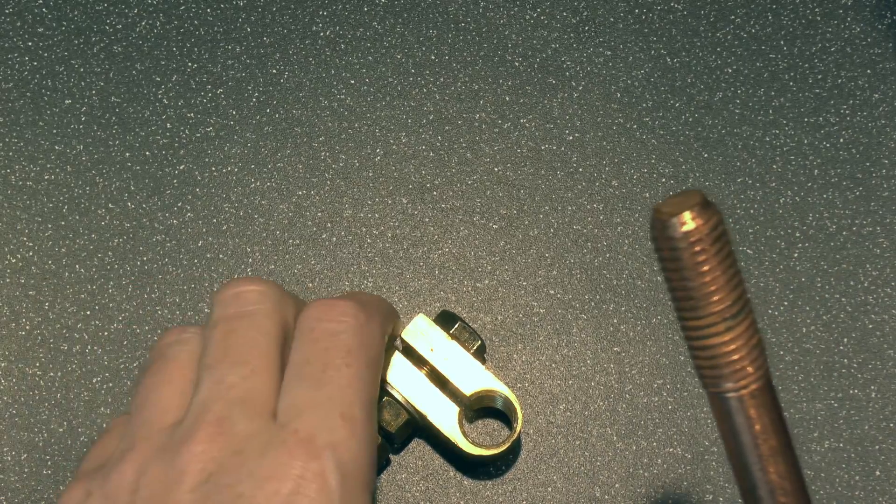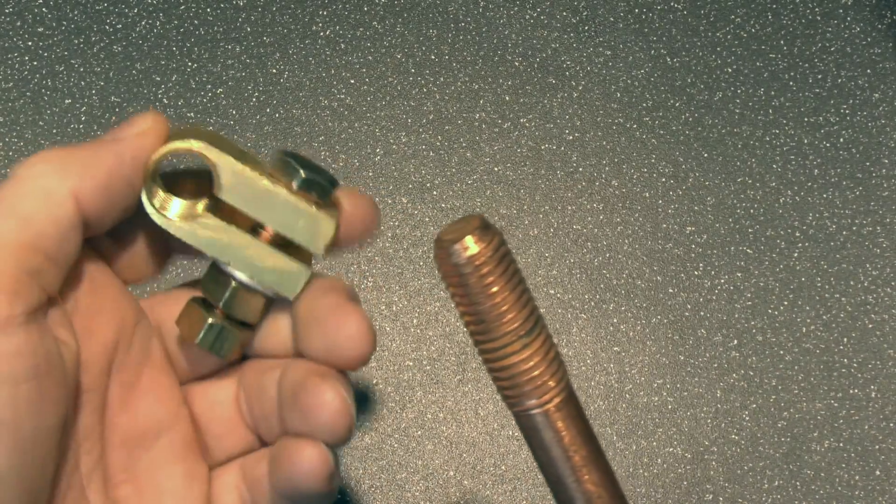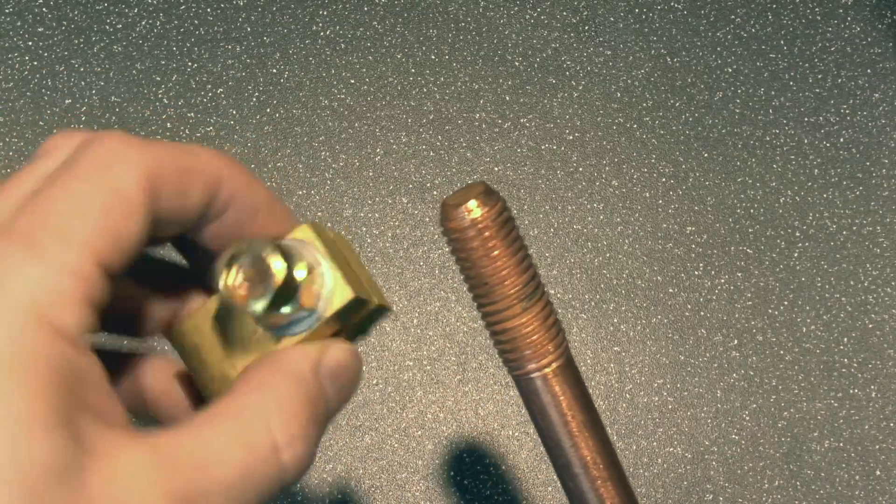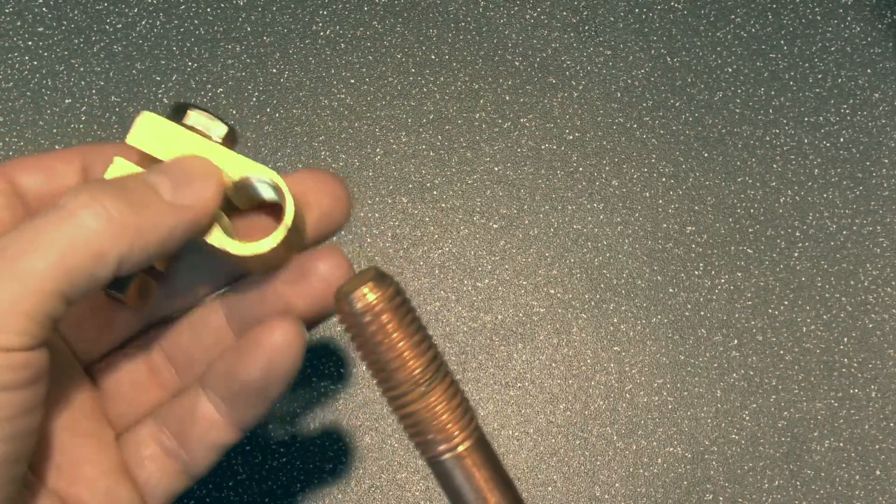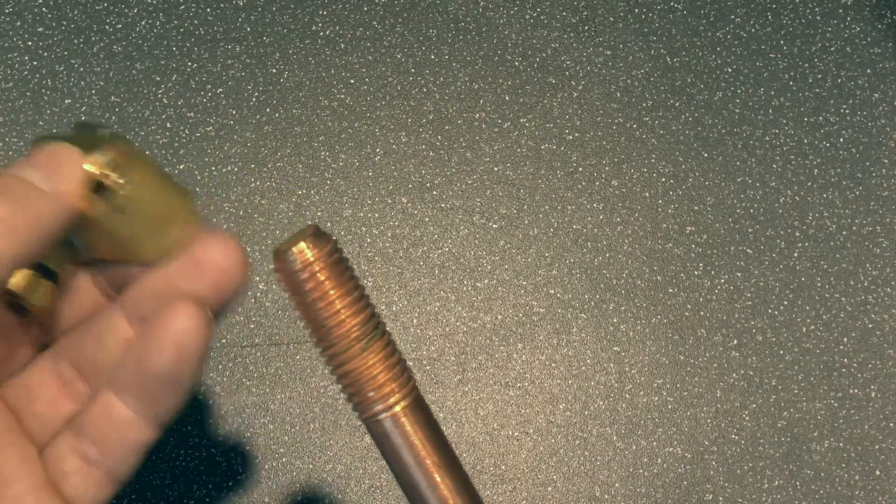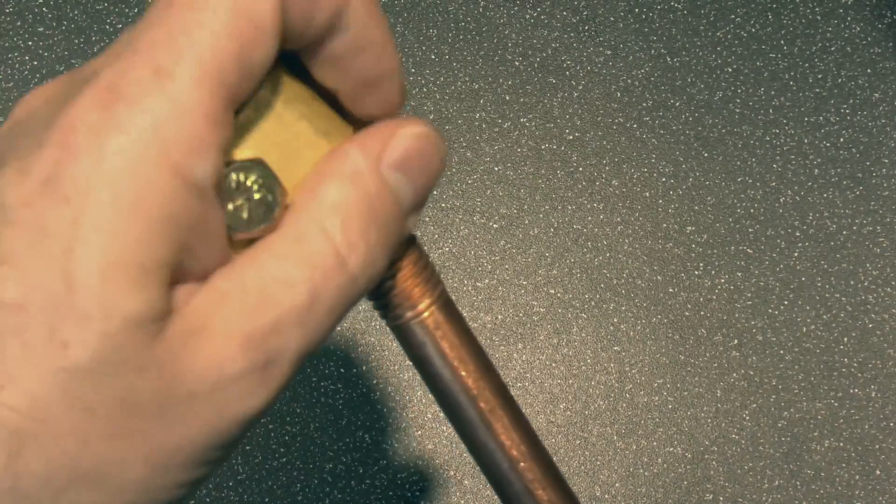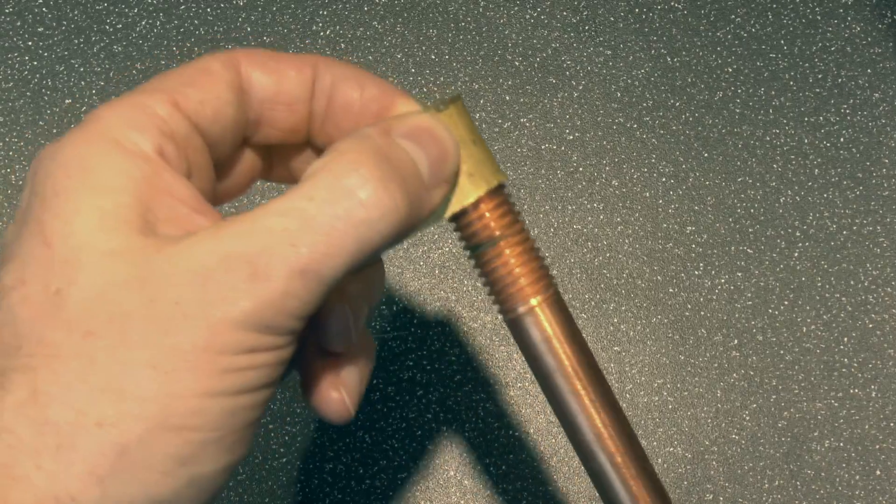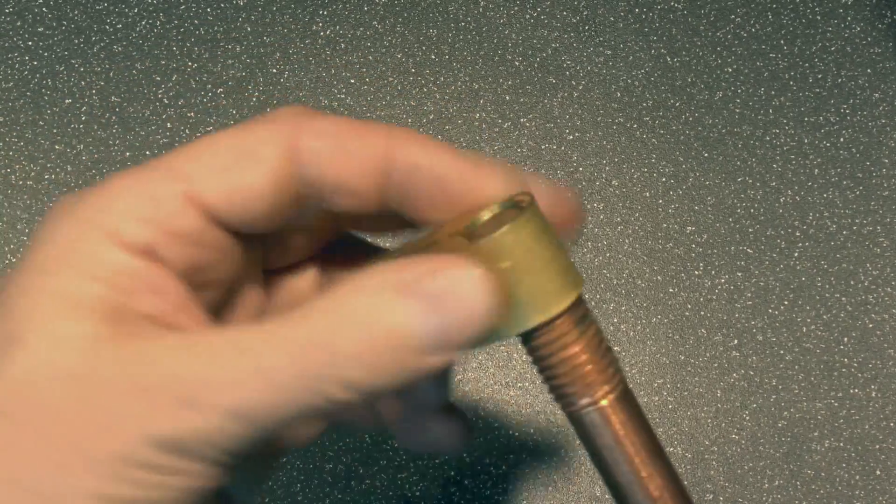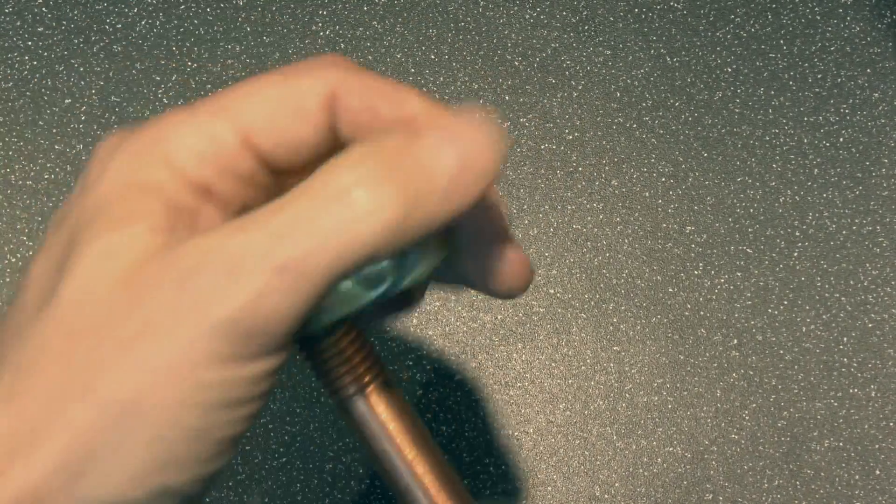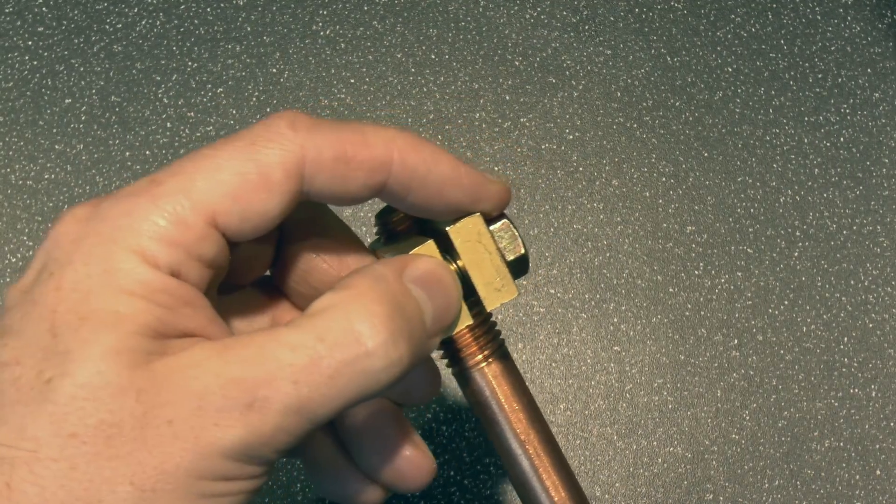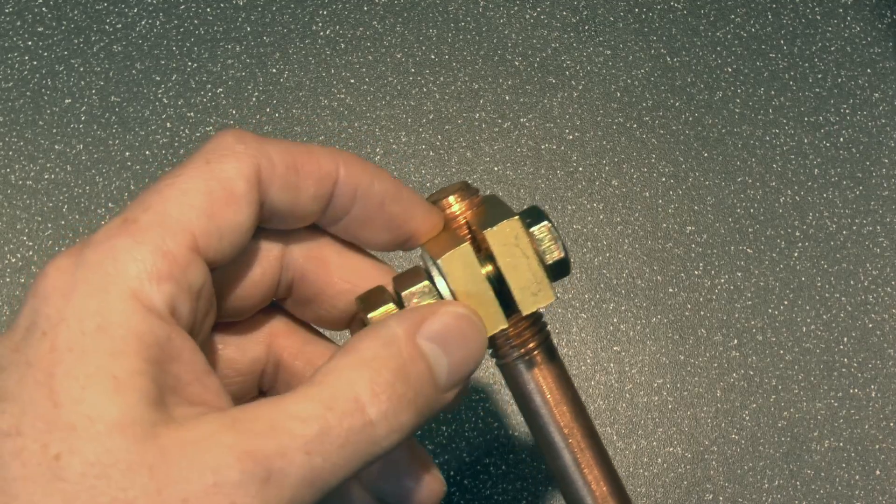And then the other item is this clamp here, so when you've finished putting the ground, this thing here goes over the threaded part, and that's where you would attach your earth wire to. Now this is also threaded inside there, so you can put that on the end of here, just thread that onto the end. Once it's down there you can then tighten up the bolt to basically pinch that in and make a good solid connection.